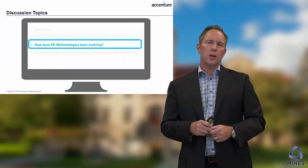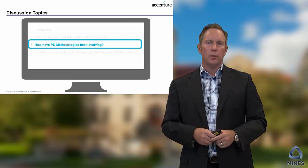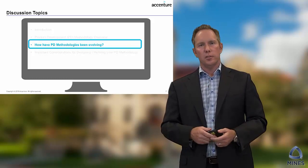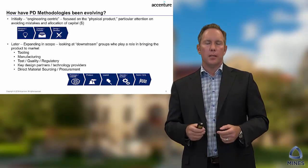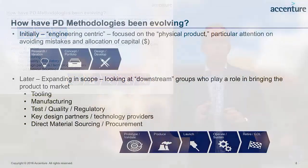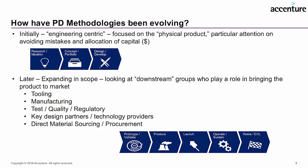Now let's talk about how product development methodologies have been evolving over time. I've been working with some of the world's leading companies for over 20 years and I've seen their methodologies change. Initially they were very much engineering-centric — engineers were getting together, designing the product, very much focused on the physical element, making sure it would fit together and actually work. The main thing with the phase gate at that point was how you allocated capital. The risk in that situation is you've designed it, but as it's time to build it, maybe you can't — or not efficiently. Or if you're trying to service or distribute it, maybe it's not maintainable or can't fit in packaging. There are a lot of downstream considerations from additional stakeholders that need to be factored in during design.